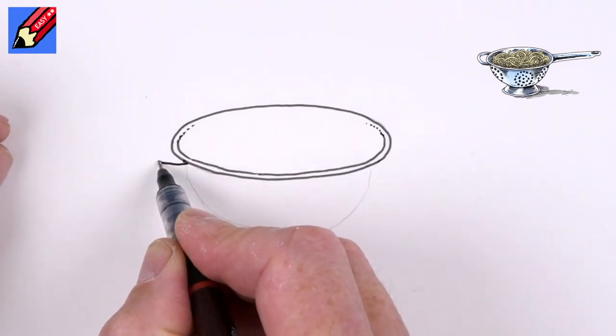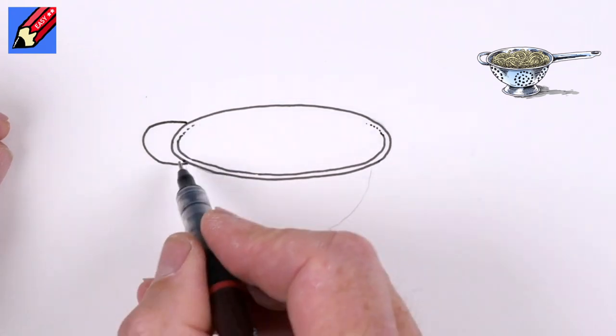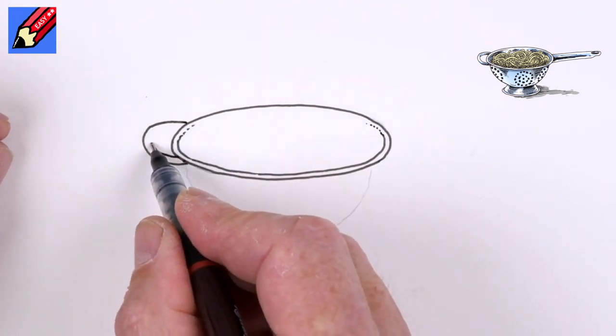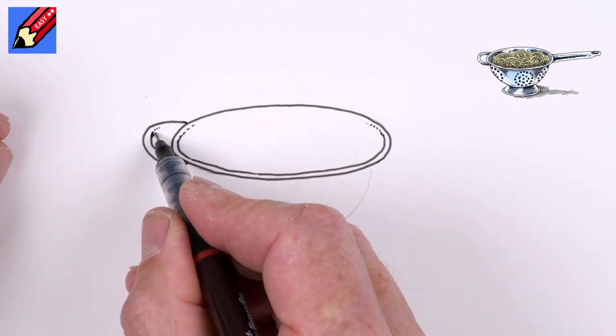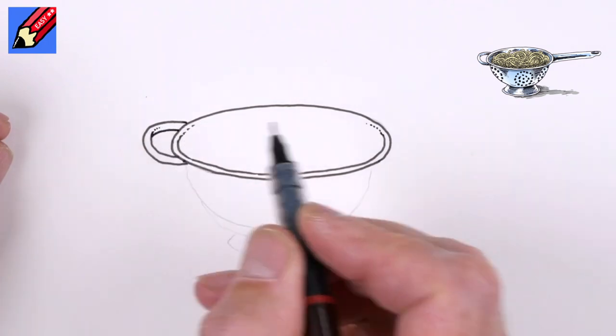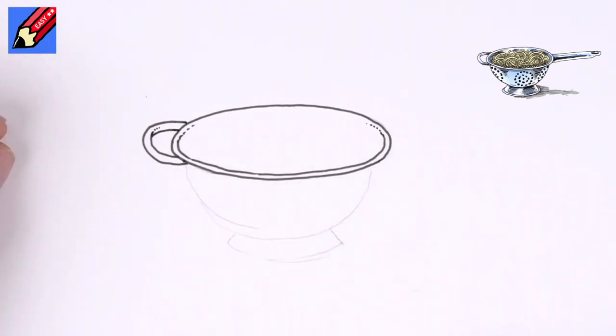Then we're going to want to have the handle coming around like that there. And then that's going to come around like that. And then we're just going to dot that and then we'll continue it around like that. So that gives it a bit of sort of three-dimensional shape to it.